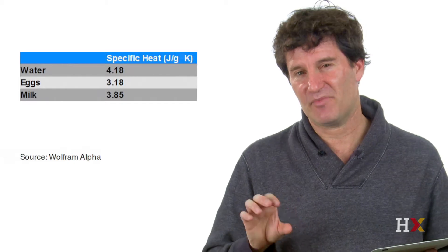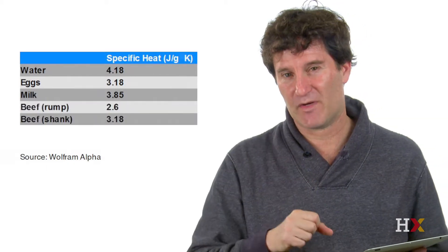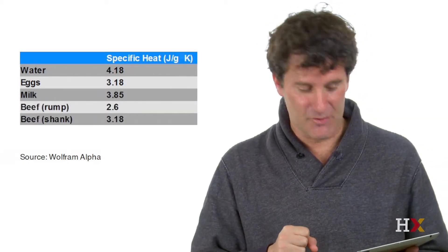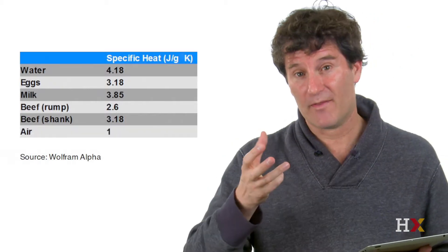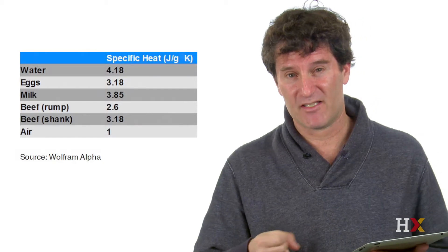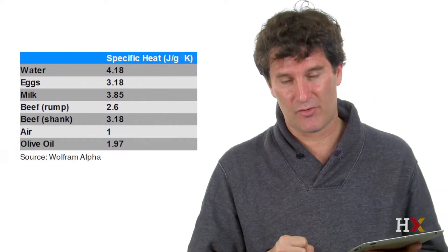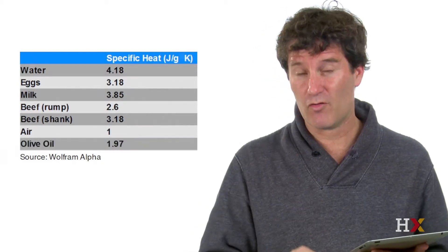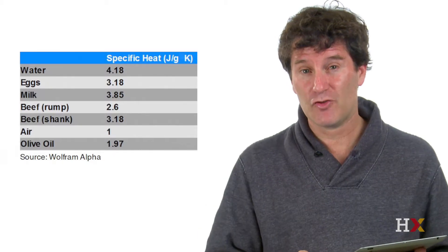For air, the specific heat of air is 1. The specific heat of olive oil, something which is also useful for cooking, is about 1.97 joules per gram per degree Kelvin. So it's actually a lower specific heat by about a factor of 2 than that of water.